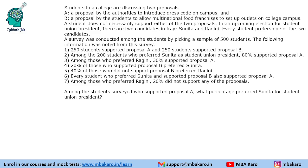A student does not necessarily support either of the two proposals, so a student can support one, none, or both proposals. In an upcoming election for student union president, there are two candidates — Sunita and Ragini — and every student prefers one of the two candidates. A survey was conducted among the students by picking a sample of 500 students, and some information was given to us.